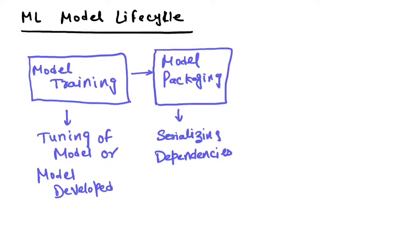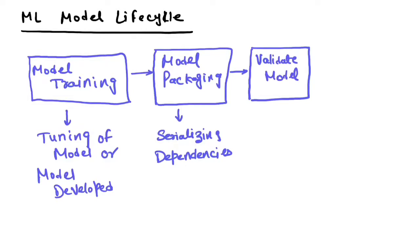The third stage is validating the model. Whatever model you have packaged, just before deploying it to production, you need to ensure it is still running correctly on some sample dataset. The serialized model runs on sample data, generates predictions and scores, and you validate those to confirm the packaged model is working as per your expected behavior.